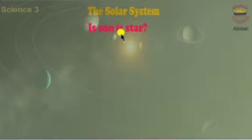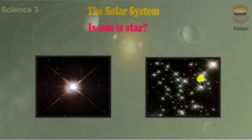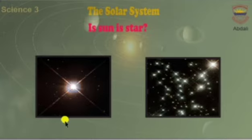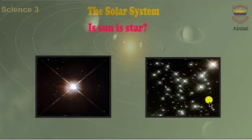Is the sun a star? Yes — the sun is actually a small star, though it looks bigger than the other stars because it is closer to the earth. As you can see in this picture, the sun looks like a bigger star, but it is actually a small star.